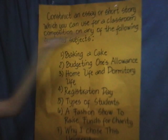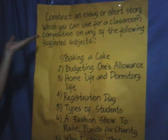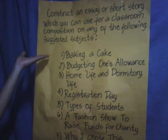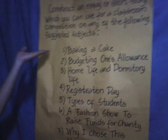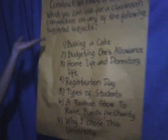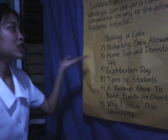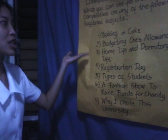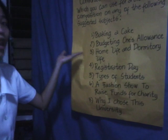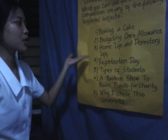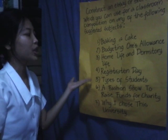For your exercise, you have to construct an essay or short story which you can use for a classroom composition on any of the following suggested subjects: Number 1, Baking a cake. Number 2, Budgeting one's allowance. Number 3, Home life and dormitory life. Number 4, Registration day.